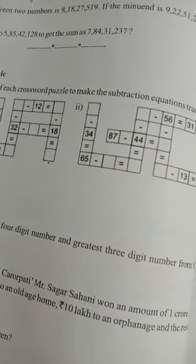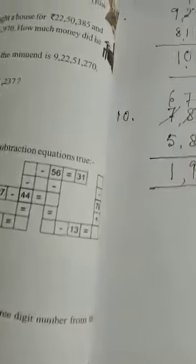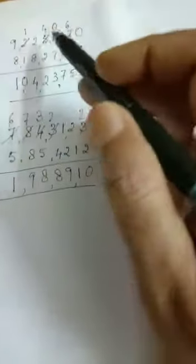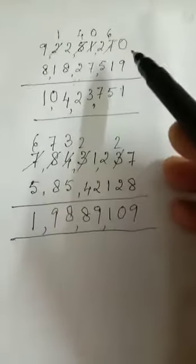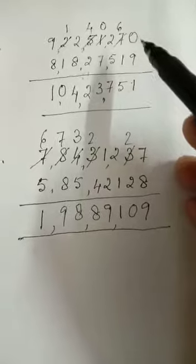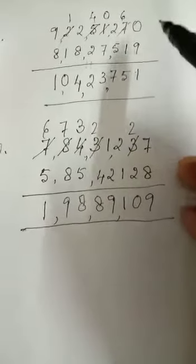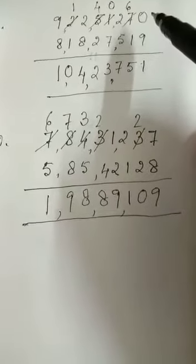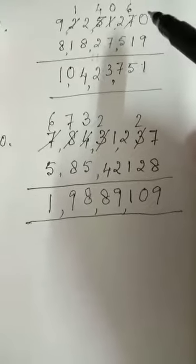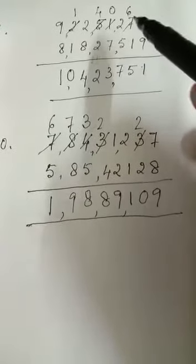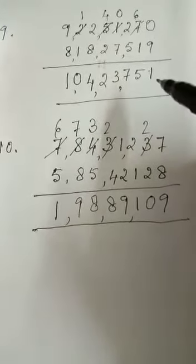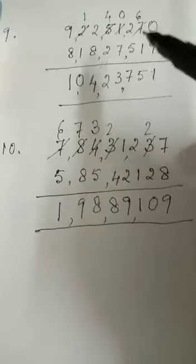So, let us try then, number 9. Write these numbers in the place value chart. Similarly, then the smaller number, subtract then. So, 0, you have here. So, borrow 1 again, 10 minus 9, 1. 6 minus 1, 5.